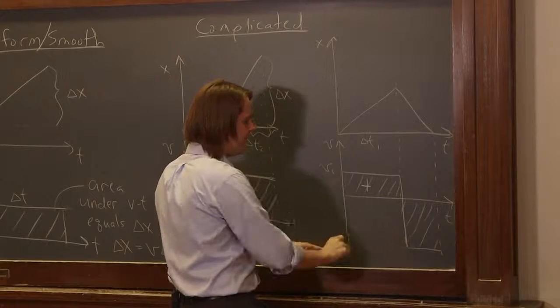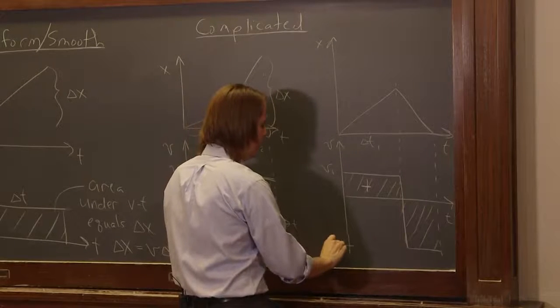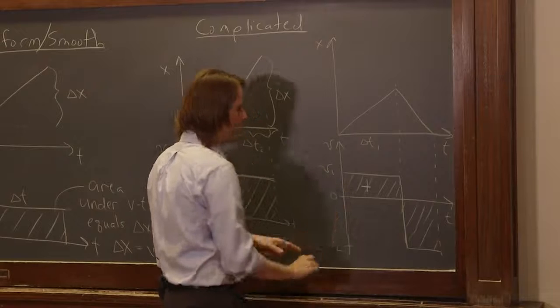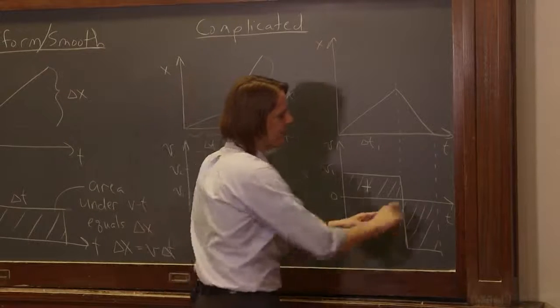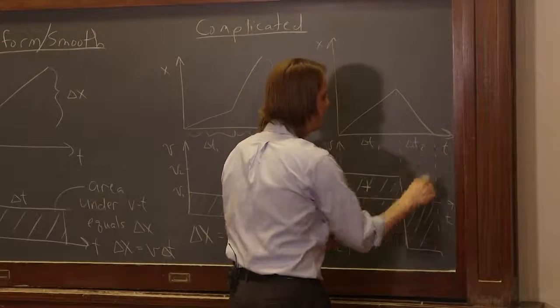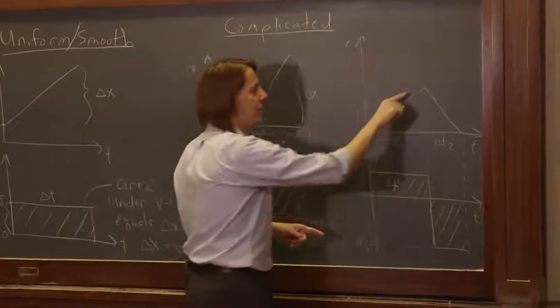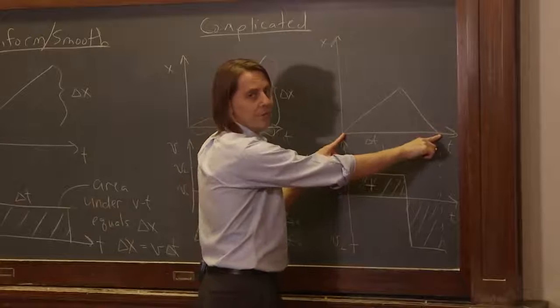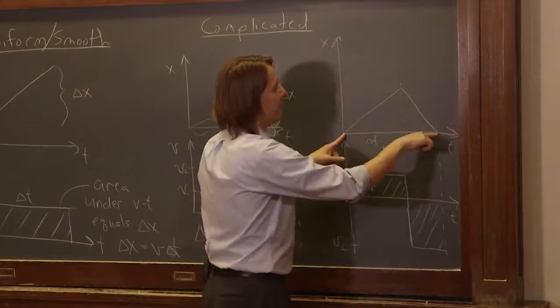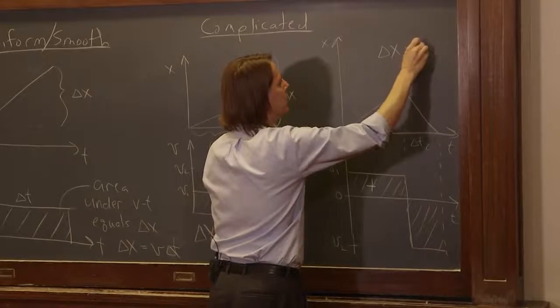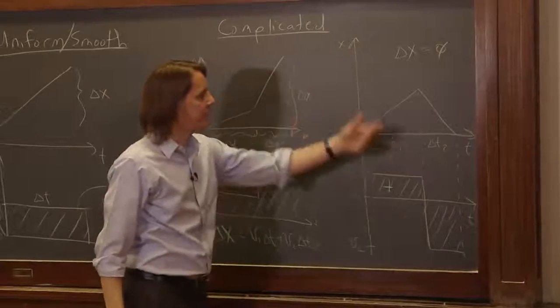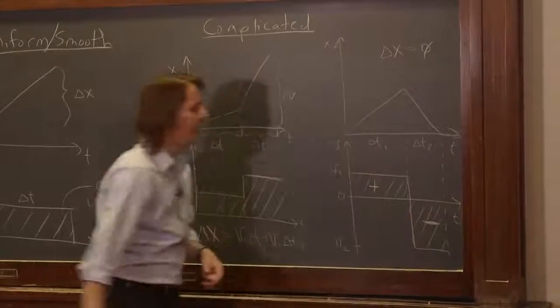And this, since it's negative, would give you a negative contribution: v2, because this is the origin. This negative v2 times this delta t2. And those two would cancel, and I know they would cancel because it came right back where it started. The delta x is zero. Since the delta x is zero, these two have to add up to be zero.